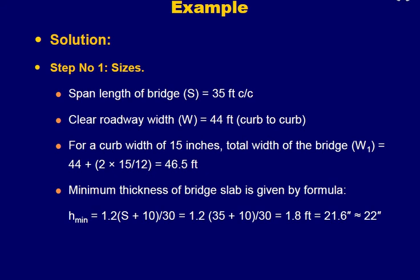Step 1: defining the sizes of the bridge members. The span length is 35 feet center to center and the clear roadway width is 44 feet curb to curb. With a curb width of 15 inches on each side, the total bridge width is 46.5 feet. The minimum thickness of the bridge slab is given by the formula: h_min = 1.2 × (S + 10) / 30. From this formula we get 1.8 feet, which is approximately 22 inches, so the deck slab thickness is 22 inches.